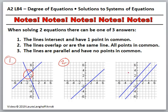And then number 3 is the lines are parallel. And if they're parallel, it means they never touch. They never cross. They will have no points in common. So there are only three options. They have 1. They have all. Or they have none. Let's move on.